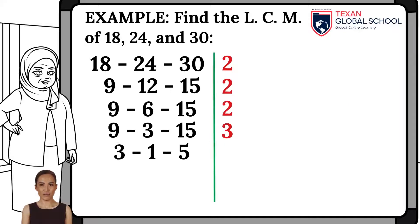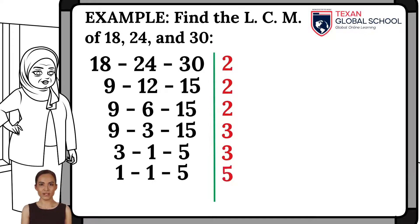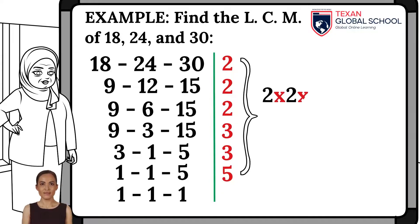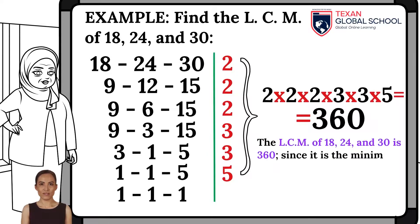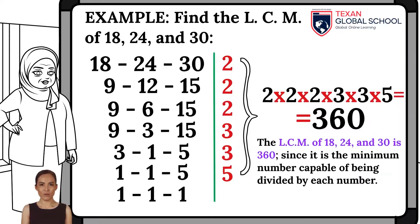Now by 3, thus obtaining 3, 1, and 5. Again by 3, results are 1, 1, and 5. Finally, by 5 we get 1, 1, and 1. Therefore, the least common multiple of 18, 24, and 30 is 360.